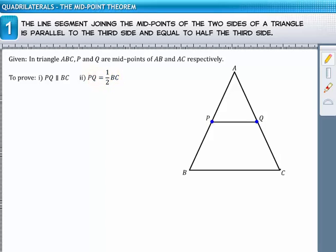Draw a line CR parallel to BA such that it meets PQ produced at R. Here, we will prove that the quadrilateral BCRP is a parallelogram. Let's begin with the proof.